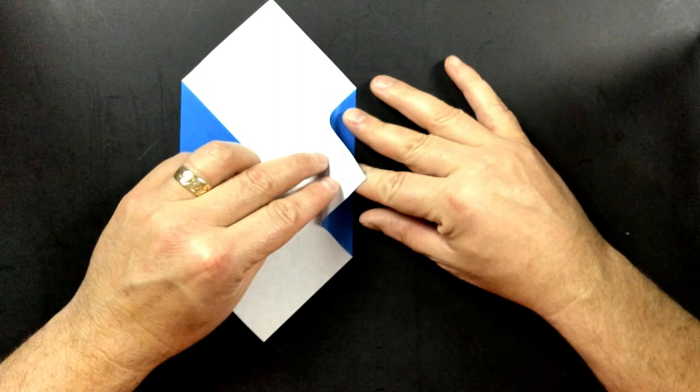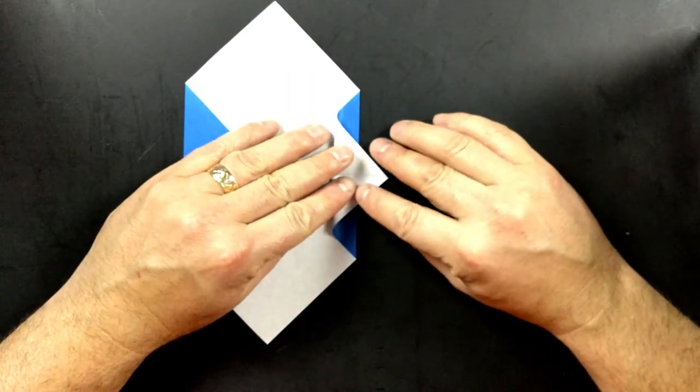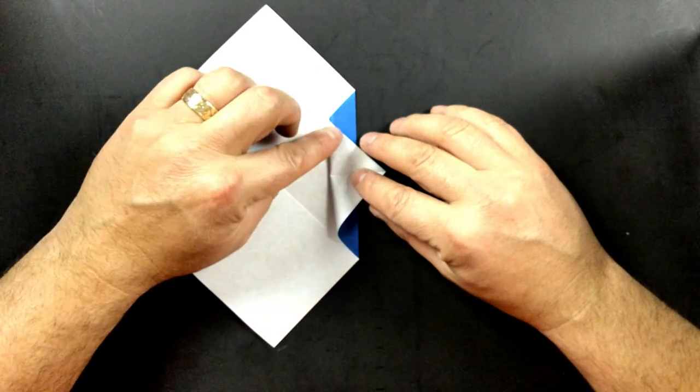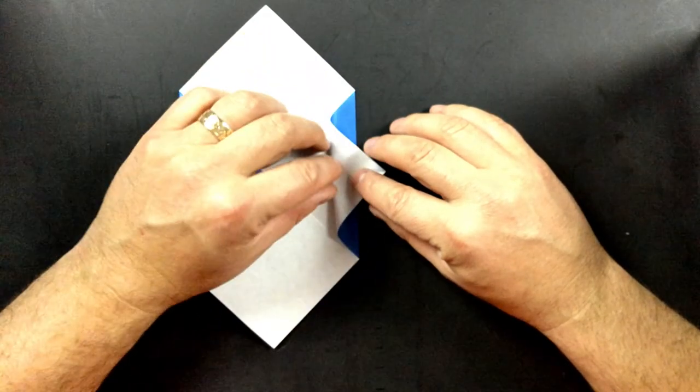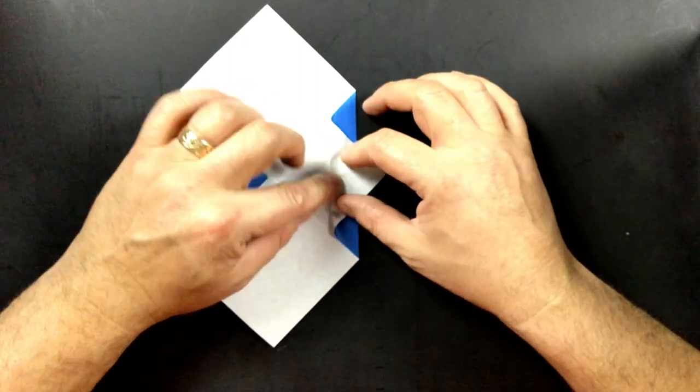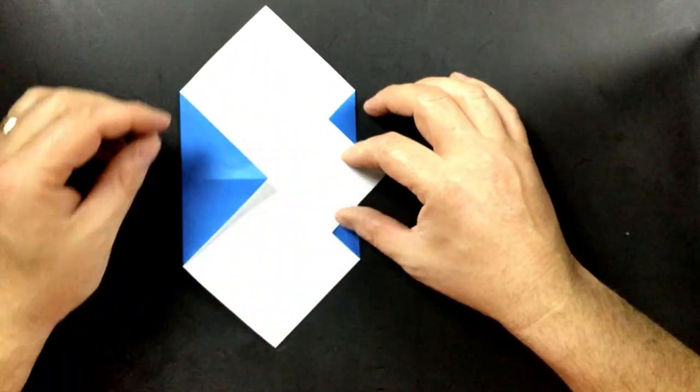So get it out there and make sure that you line up that fold. And then this fold here that you're creating will be parallel to this one on the outside. Go ahead and fold that down.